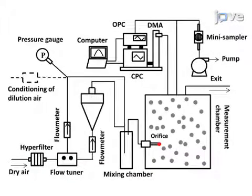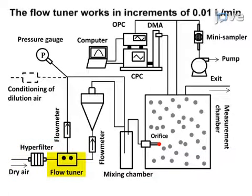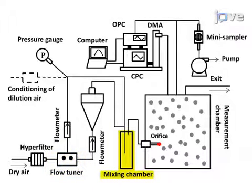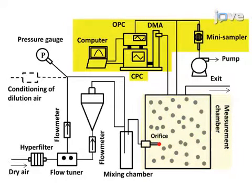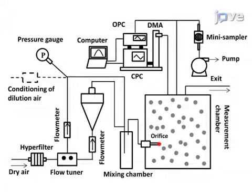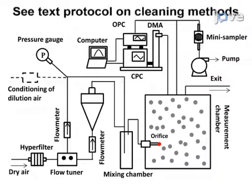This schematic provides an overview of the complete system. Dry compressed air is filtered with a hyperfilter before it enters the system. A high-precision flow tuner controls the flow rate into the aerosol generator. The generated aerosol meets a dilution flow in the mixing chamber, then enters the measurement chamber for either aerosol or deagglomeration testing. Computer-controlled measurement instruments include a scanning mobility particle sizer, an optical particle counter, and a transmission electron microscopy sampler. All chamber walls should also be cleaned and particle-free to begin the experiment.